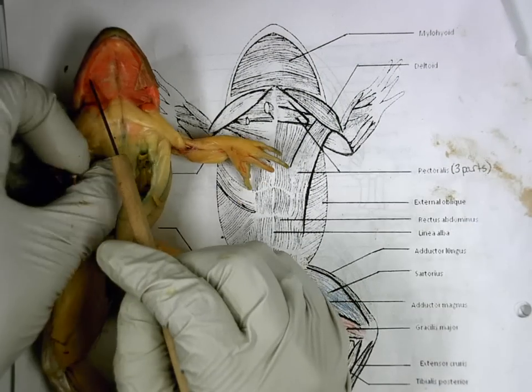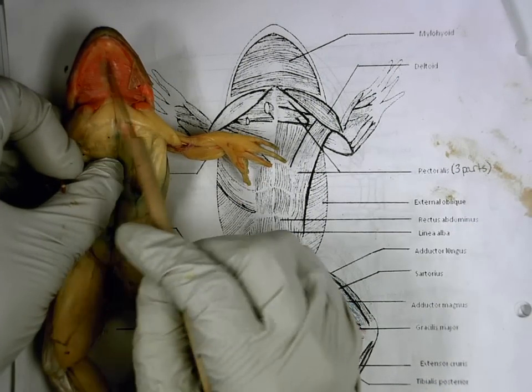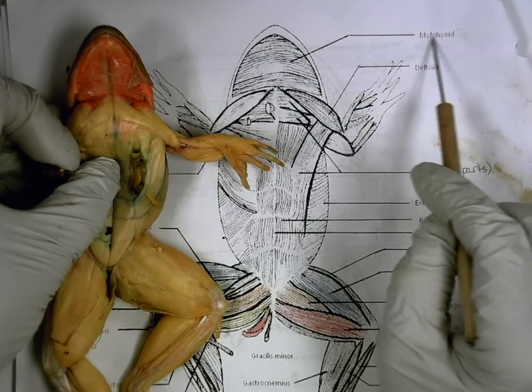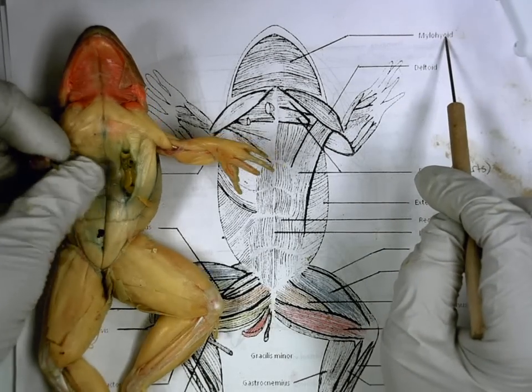Okay, here we go, you guys. These muscles across the chin are the mylohyoid.